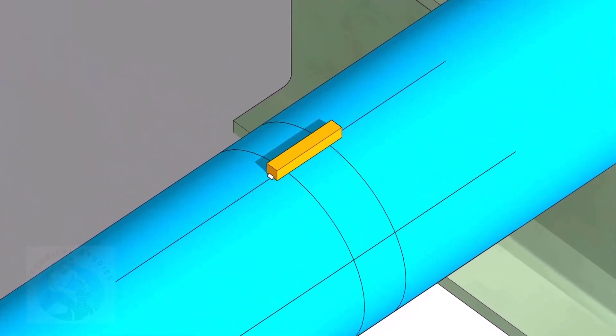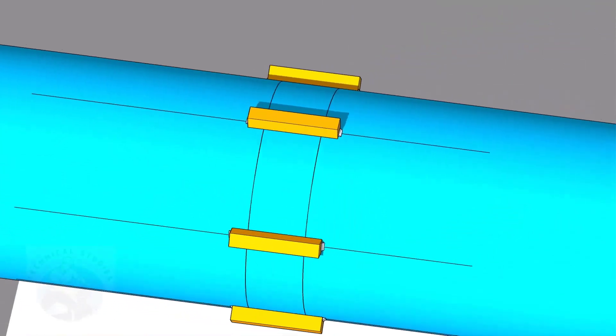Tack weld the square bars on the pipes as shown. Do not weld two big tacks.